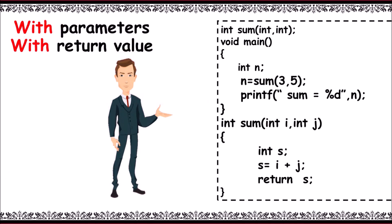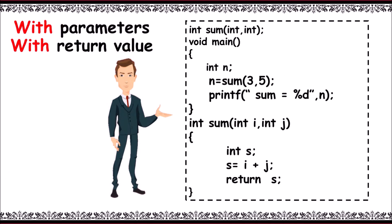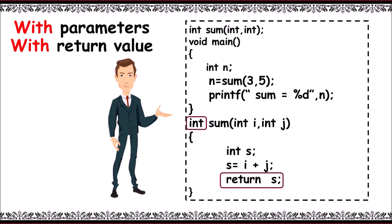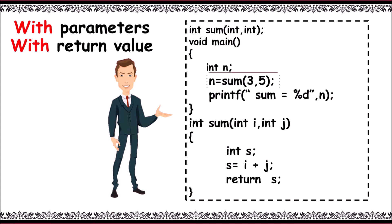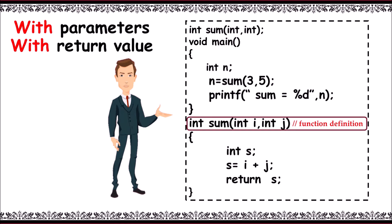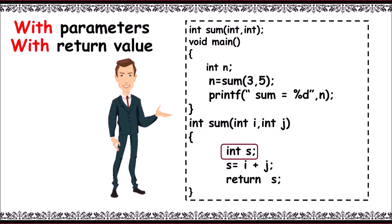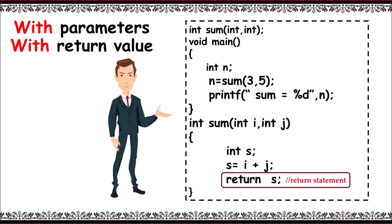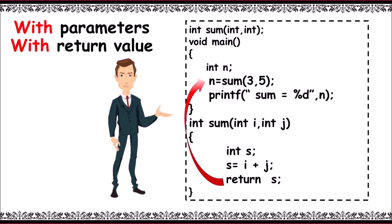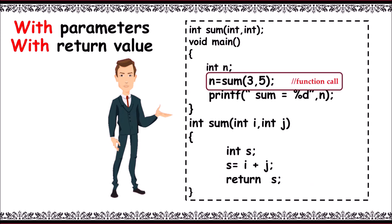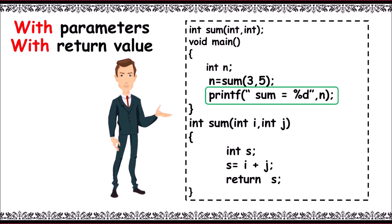Next comes with parameters and with return value. You can see a function named sum with parameters 3 and 5, and you can also observe a return statement present in the function. First, the function prototype. Then main — n variable to store the return value. n is equal to sum(3, 5). The function call passes two parameters 3 and 5 to function definition sum(int i, int j). Then declare s to store the sum. i plus j, that is 3 plus 5 — 8 is stored in int s. Then return s. The return value s is returned to calling function and 8 is stored in n. Printf prints: sum is equal to 8.